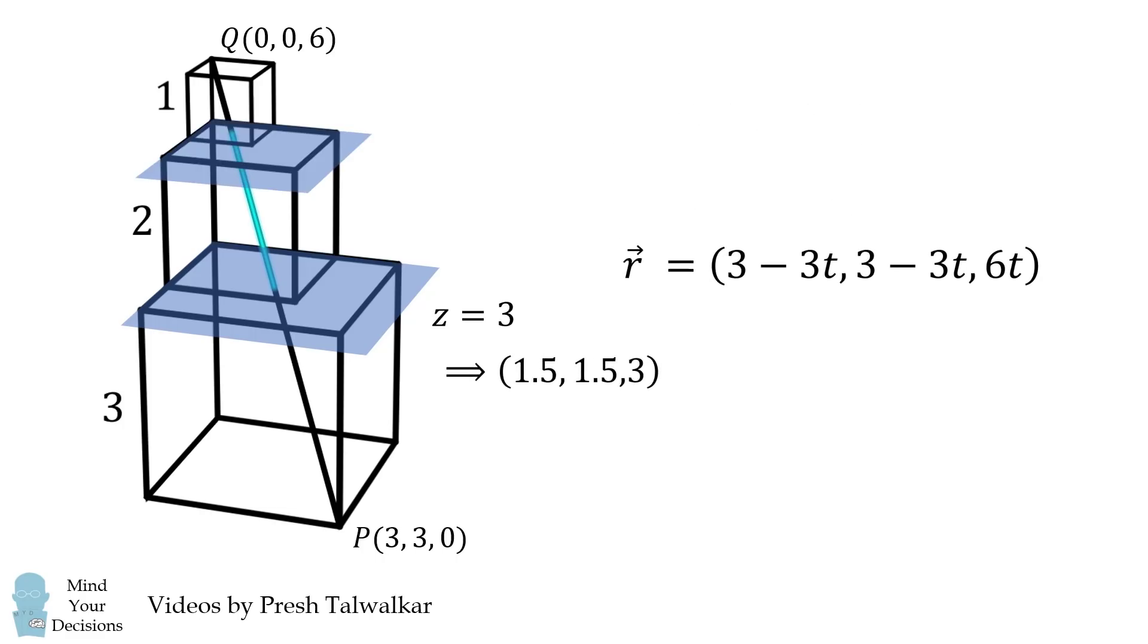We then want to find the intersection of this line with the plane z is equal to 5. This means 6T is equal to 5, which means T is equal to 5 over 6. We substitute into the equation for the line and we get the point (0.5, 0.5, 5).